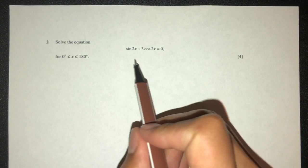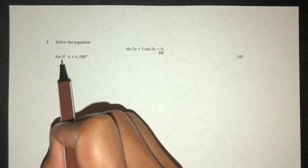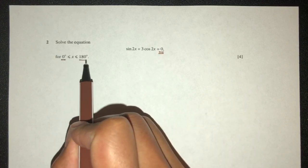Now let's move on to the next question. We have to solve sin 2x + cos 2x = 0 for the value of x between 0 and 180 degrees.